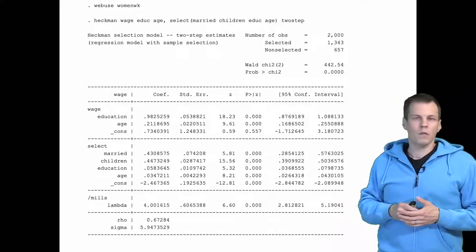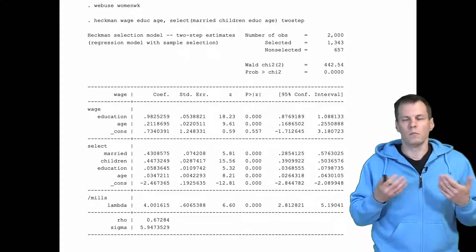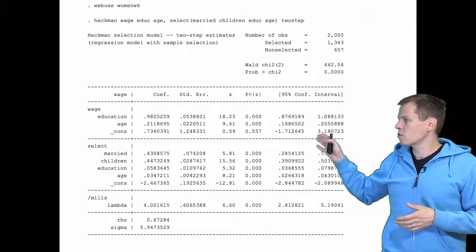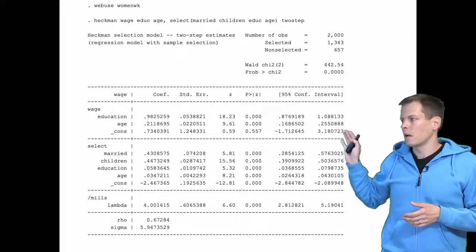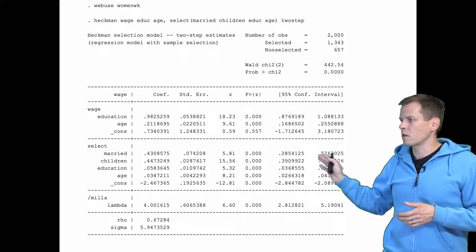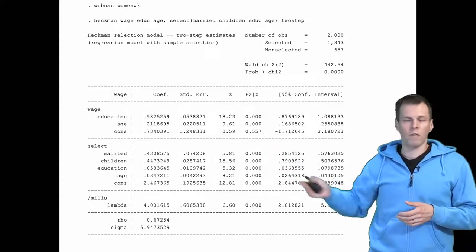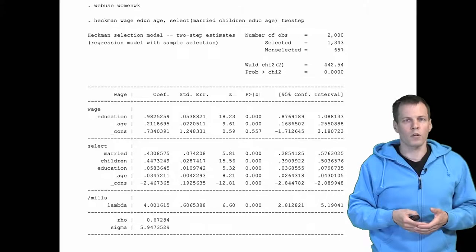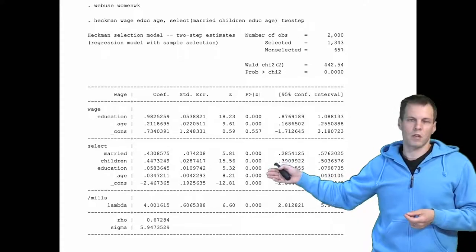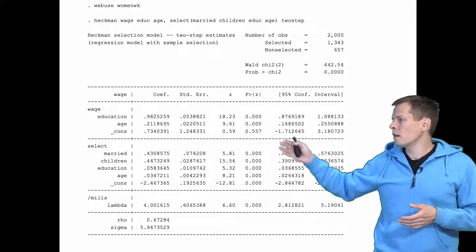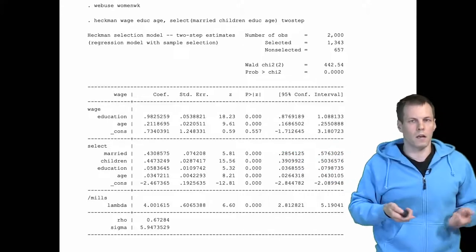Running the Heckman selection model on this artificially generated dataset gives us two sets of estimates: the wage equation (the equation of interest) and the selection equation (which is simply a probit model). From the selection equation, we can see that being married, having kids, being older, or having higher education all make you more likely to work. The wage equation then controls for the selection effect.